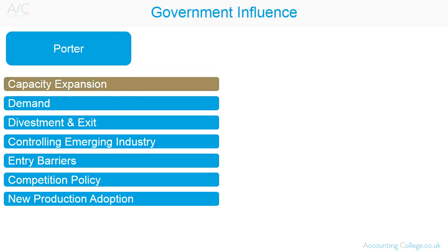Capacity expansion: governments are responsible for infrastructure, for example roads and railways used by industry. Governments may offer incentives or impose restrictions on certain industries. Demand: governments may be a major customer of an industry. Legislative measures may influence demand, for example tax reliefs or taxes imposed on certain industry products. Divestment and exit: government may prevent the sale of an organisation in a specific industry if it is in the public's interest.